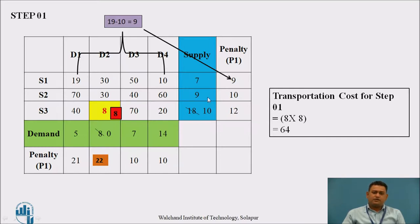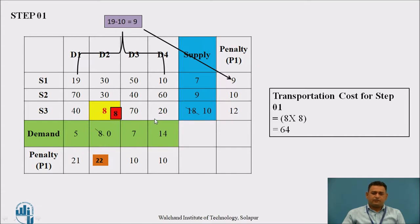The highest penalty among all rows and columns is 22, which lies in the D2 column. In the D2 column, the transportation costs are 30, 30, and 8. Out of these, the smallest is 8, so we select that cell. This cell lies in source S3. Destination D2 has a demand of 8 and source S3 has an availability of 18, so D2 is satisfied by 8. As it has been satisfied, there will be a column reduction in the next step. The transportation cost for this step is 64.